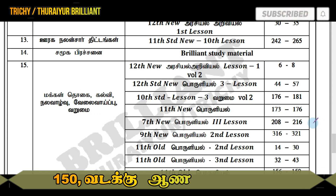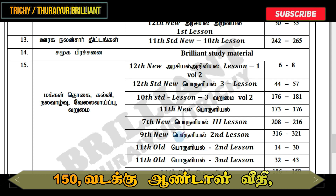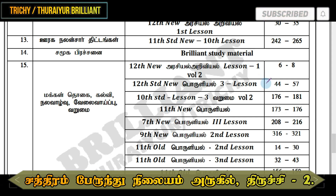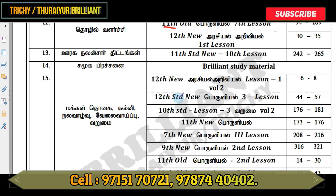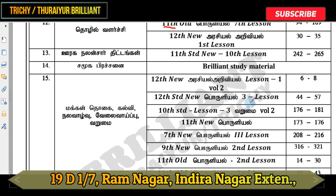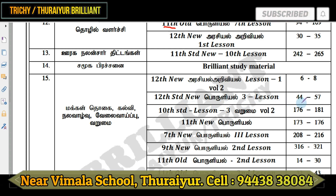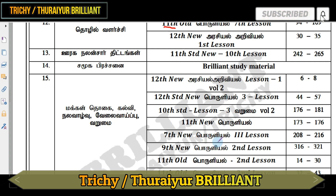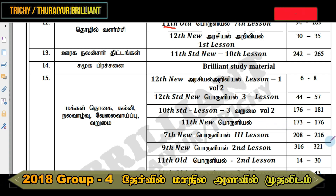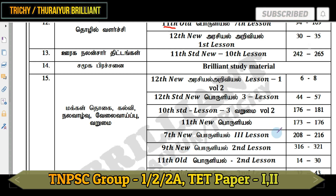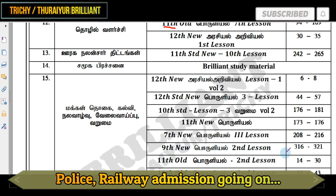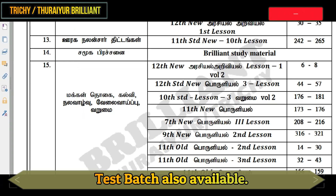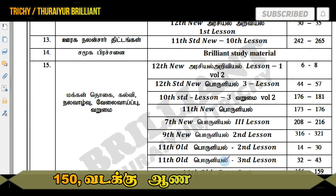For example, the 5th lesson is 1. The 12th new lesson, lesson 1, volume 2: 6 and 8. The 12th new lesson 3: 44 and 57. The 6th lesson is the 12th lesson and 8. 11th new Polli, 3rd lesson. 9th new Polli, 2nd lesson: 13, 16, 30. 21st new Polli, 2nd lesson: 14 to 30. 11th new Polli, 3rd lesson.